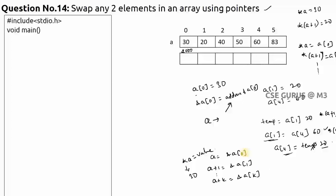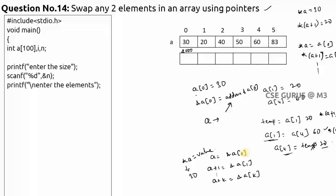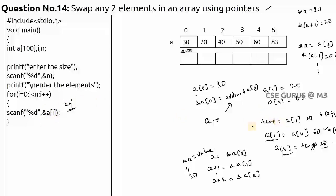In the code, we enter the array size, then enter the elements. Remember that &a[i] is equivalent to a+i — both represent the address of the i-th element. This is what I explained: &a[i] equals a+i.